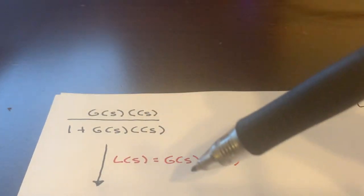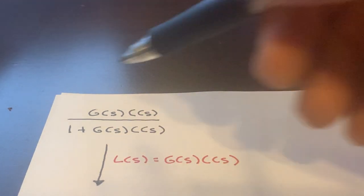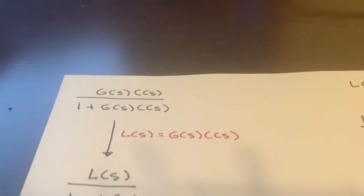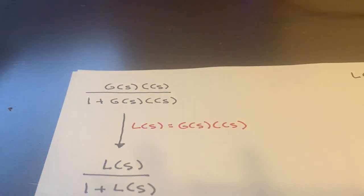So that's kind of the loop transfer function. So that's the G and C. That's the part in the loop when we're calculating closed loop transfer functions. And so I can write this as L of S over one plus L of S.